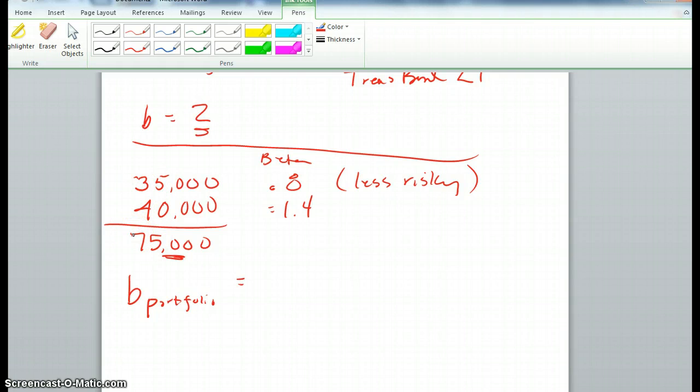In other words, we'll take $35,000 over $75,000. So out of a total investment of $75,000, we have $35,000 in one particular stock. And we're going to multiply that times that stock's beta of 0.8.